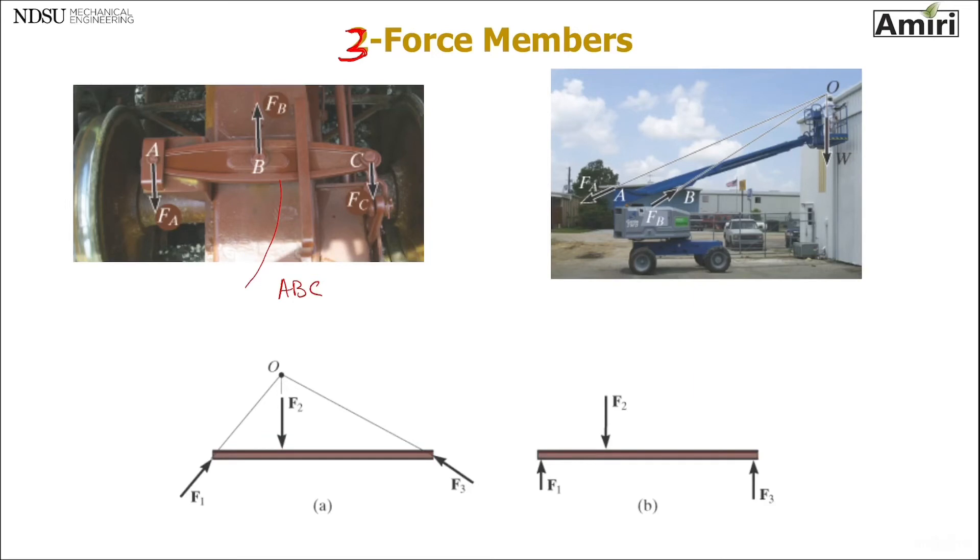It's a brick system of a tractor. The one on the right, it's a lift, or it's a boom lift. Forces are applied at A and B and O. So both of them are three-force members. For a three-force member to be in equilibrium, or to count as a three-force member, the moment equilibrium can be satisfied only if the three forces are concurrent.